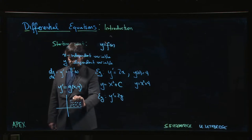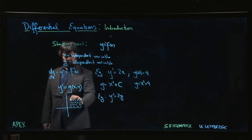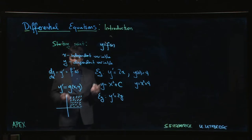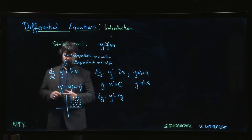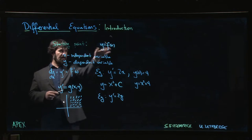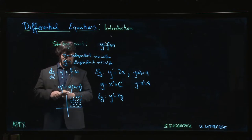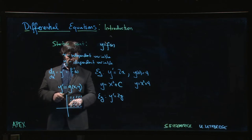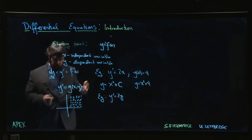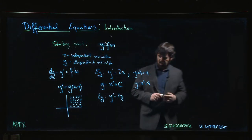And so you'll see these pictures where you have kind of little bits of slope drawn at every point in the plane, something like this. And you're trying to come up with a function. You're trying to come up with y as a function of x so that when you graph it, it fits those slopes. So we might have something that travels like that, for example.